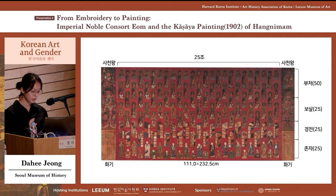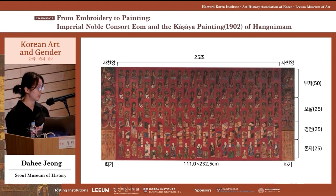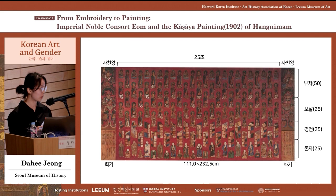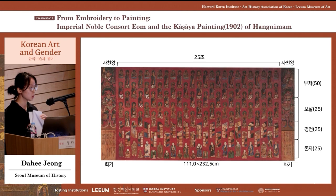Hangnimam Ga Sa Taeng is a Buddhist painting that reproduces a 25-column embroidered Ga Sa. 'Jo,' or column, is the vertical cloth attached to Ga Sa showing the grade and size, and 25 is the highest rank. In addition to its red background color, the size of Ga Sa Taeng — 111 centimeters long and 232 centimeters wide — is similar to the actual Hong Ga Sa that served as the model.